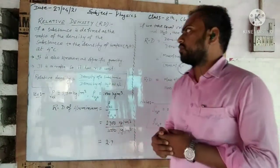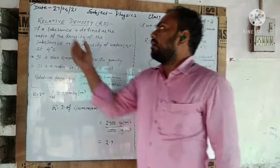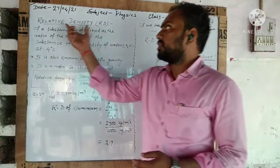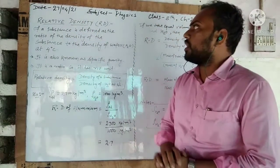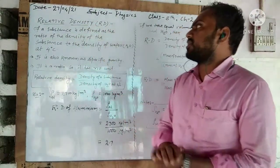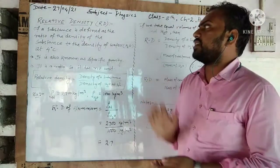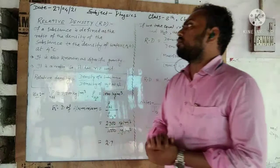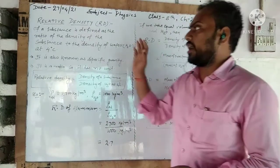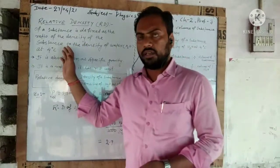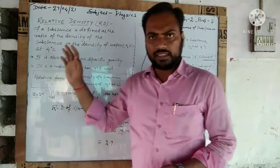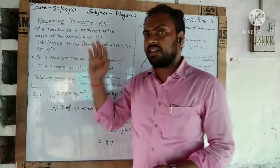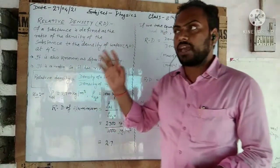So, what is relative density? Relative density of a substance is defined as the ratio of the density of the substance to the density of water at four degrees Celsius. In this definition, four degrees Celsius is mentioned, which we will learn about in the next topic: the anomalous behavior of water.